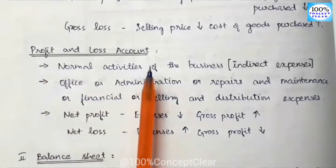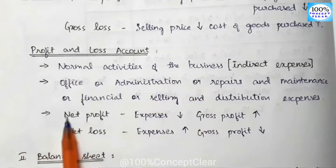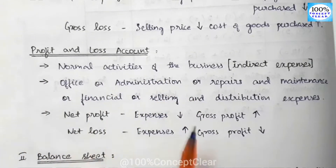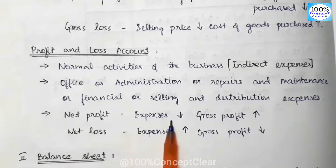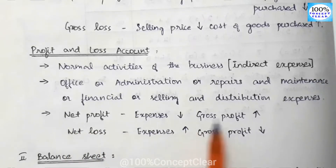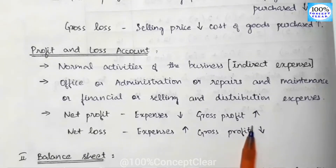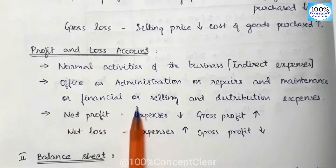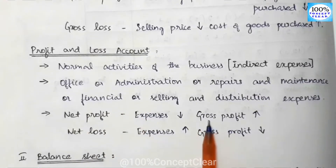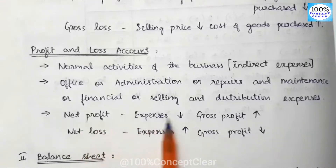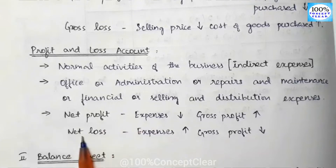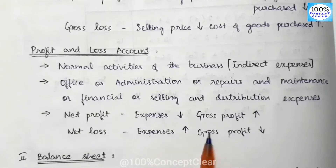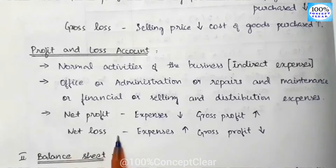We need to determine net profit or net loss in the P&L account. For net profit, expenses are low and we need gross profit. We transfer the gross profit to the P&L account to arrive at net profit in the trading account. Net loss is the opposite — expenses are high and gross profit is low, resulting in a net loss.